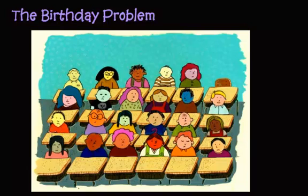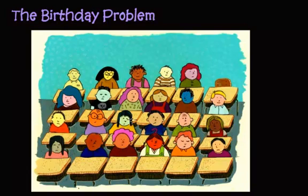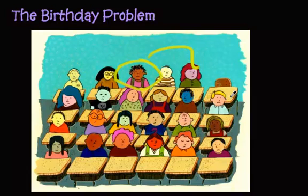What is the probability that somebody — it could be anybody — shares a birthday with someone else? Or the probability that she shares it with that guy? Or the probability that this person back here shares it with her and maybe him? The question is really asking: what's the probability that anyone in this group shares a birthday with somebody else?